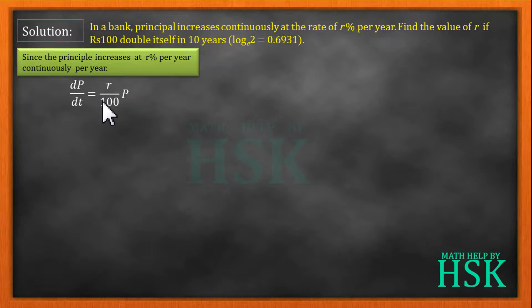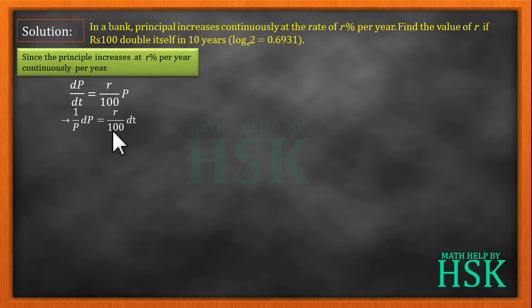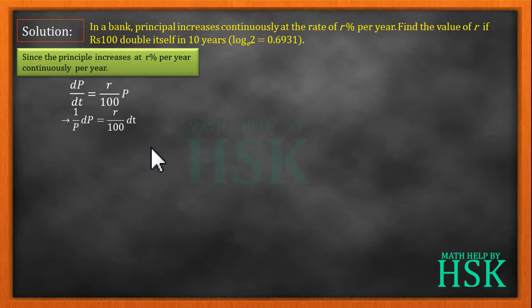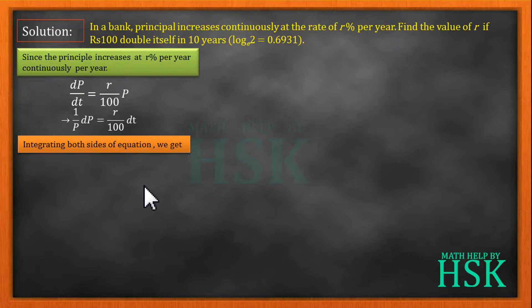This is a differential equation and we see that the variables can be separated. So we start separating the variables and we can write 1/p dp equal to r/100 dt. Now the variables are separated, so we can easily integrate. Integrating both sides, integration of 1/p dp is equal to r/100 times integration of 1 dt.